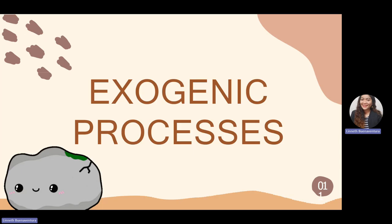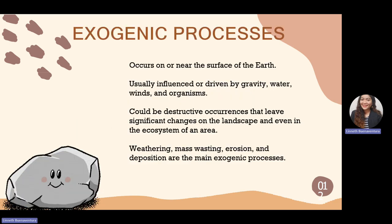Exogenic processes occur on or near the surface of the earth, driven by gravity, water, wind, and living organisms such as humans. They are destructive occurrences that leave significant changes on the landscape and ecosystem. The main exogenic processes we will discuss are weathering, mass wasting, erosion, and deposition.